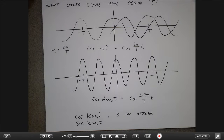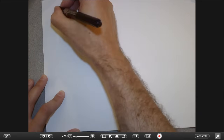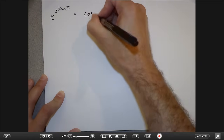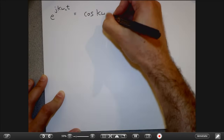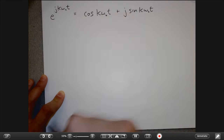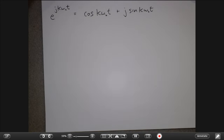Now let's put it together. If these signals each have period T, then so does this complex signal e^(jkω₀t). If I decompose this with Euler's formula, I have cosine(kωt) + j·sine(kω₀t). Both the real part and imaginary part are periodic with the same period, so they both look good.